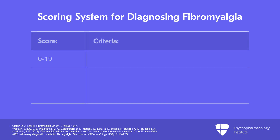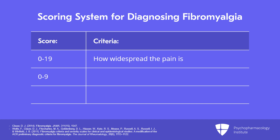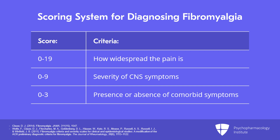In total: a score of 0 to 19 points based on how widespread the pain is on the body map; a score from 0 to 9 points based on whether people have fatigue, memory problems, and sleep disturbance and how severe those are; and a total of 3 points for just the presence or absence of irritable bowel, depression, or headache.